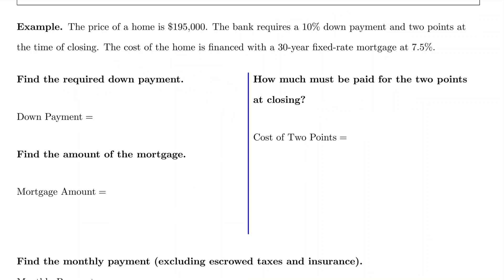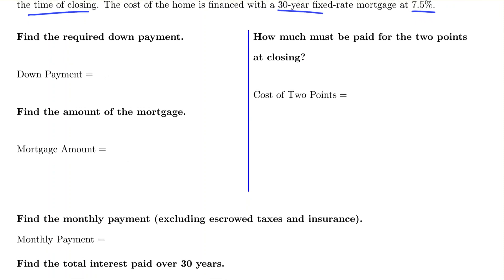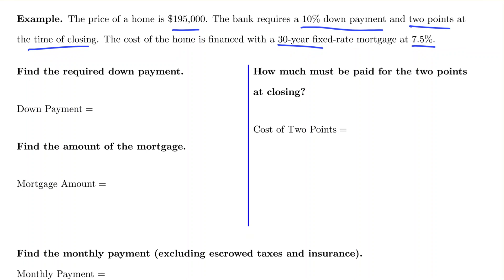Here we have a home price of $195,000. The bank requires a 10% down payment and two points due at the time of closing. We have a 30-year fixed rate mortgage at 7.5%. We need to find the required down payment, the mortgage amount, the cost of points at closing, then calculate the monthly payment and the total interest paid over 30 years.